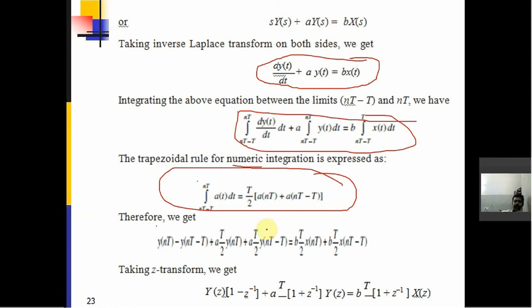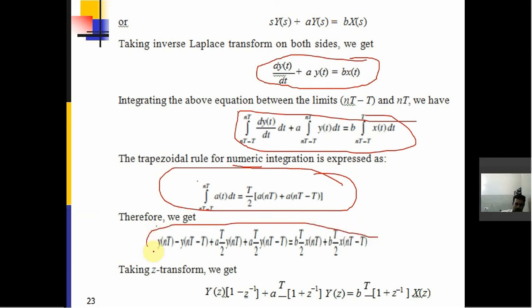Applying the trapezoidal rule to the right-hand side gives: (BT/2)·X(nT) + (BT/2)·X(nT−T). Now we take the Z-transform of this expression.